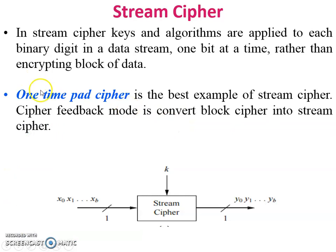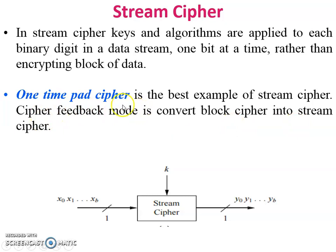An example of stream cipher is the one-time pad cipher — it is the best example of stream cipher. Cipher feedback mode converts a block cipher into a stream cipher; this is one technique to do so.